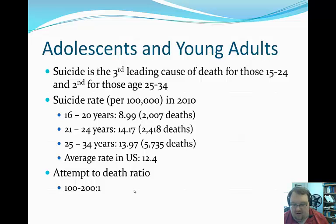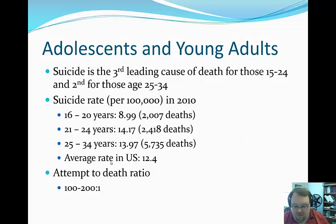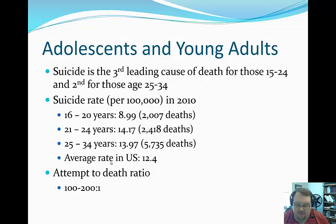The second thing to note with this attempt-to-death ratio is that part of the reason there are more deaths, thankfully, is that adolescents typically use less lethal means to attempt suicide, and they also typically have lower suicide intent — they want to die less during their attempt than those later in the lifespan. Across the lifespan on average, there are about 25 attempts for every one death by suicide, so in adolescence you do see a lot more attempts per death.